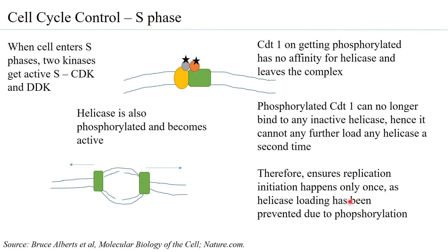CDT1 remains inactive until mitosis. Therefore the helicase cannot be loaded again. Only during late mitosis and early G1 phase, when S-CDK is inactivated, can origins be earmarked again — and this is how the control operates.